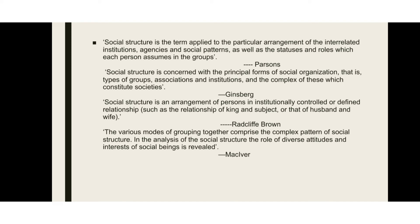According to Parsons: 'Social structure is the term applied to the particular arrangement of the interrelated institutions, agencies and social patterns, as well as the statuses and roles which each person assumes in the groups.' That is, one particular arrangement of interrelated institutions, agencies, social patterns, statuses, and roles — this is the term social structure.